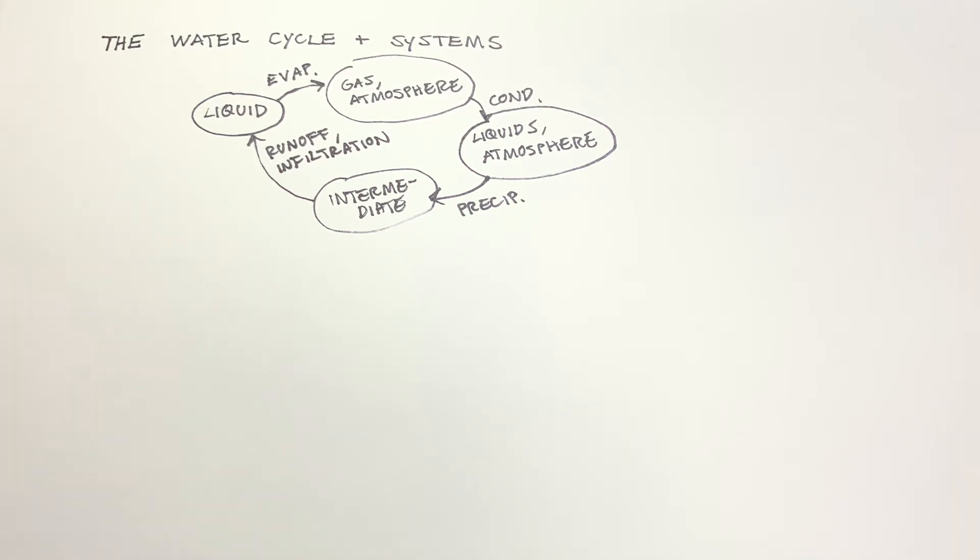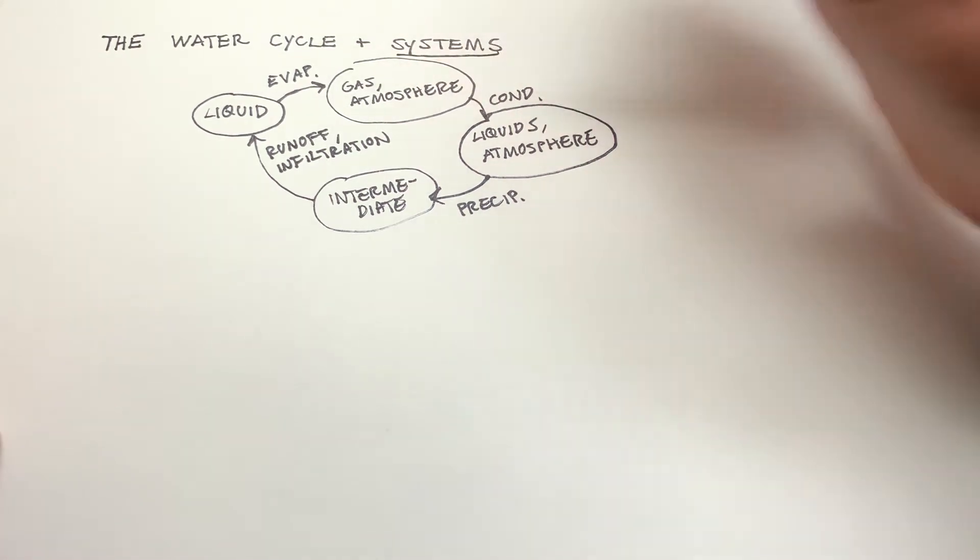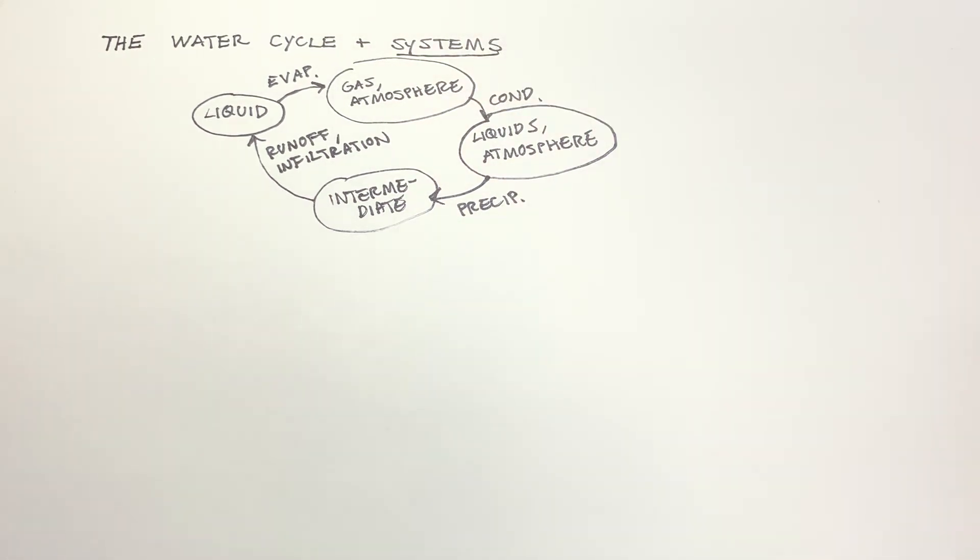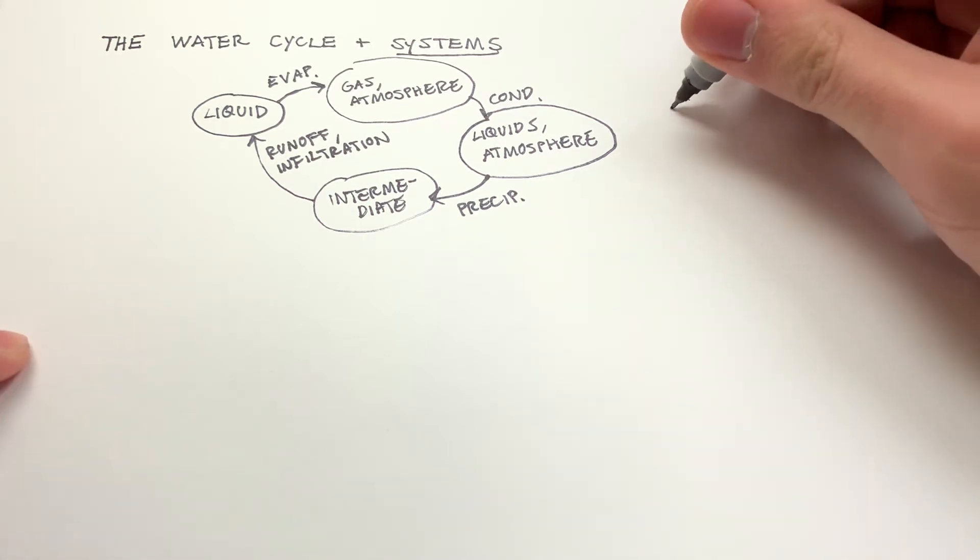An important thing to understand with these water cycle processes is that all of them are transfers of water, water mass, in and out of systems. In earth sciences, systems broadly refers to any piece of the universe, any subset of the universe that we can define with clear boundaries.